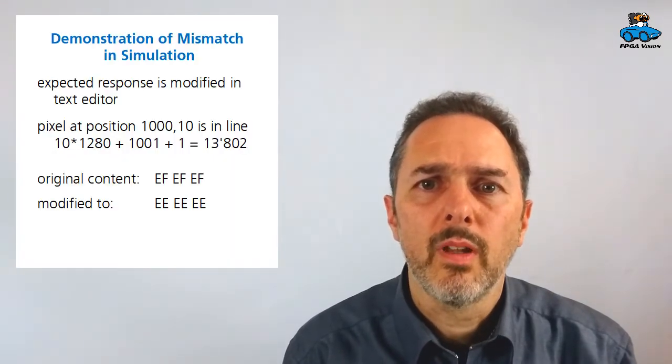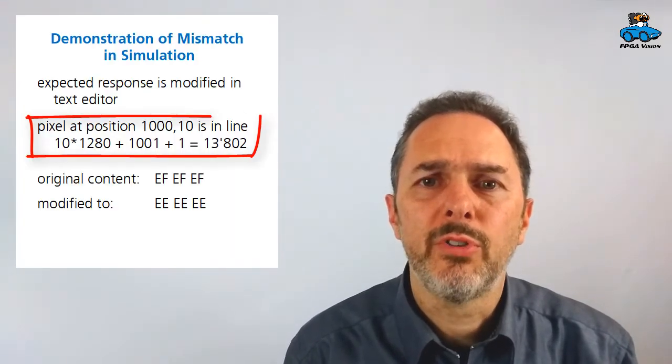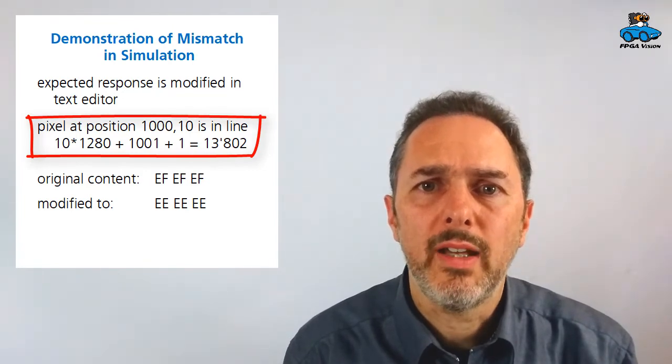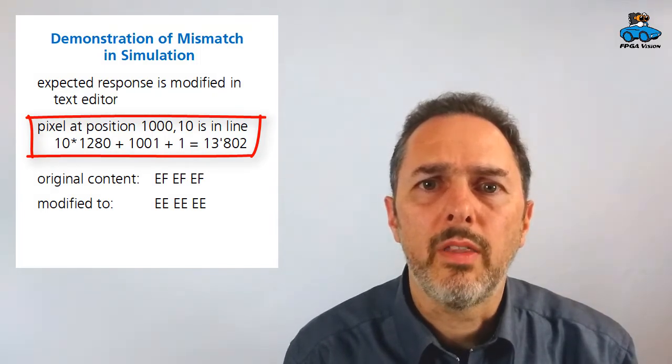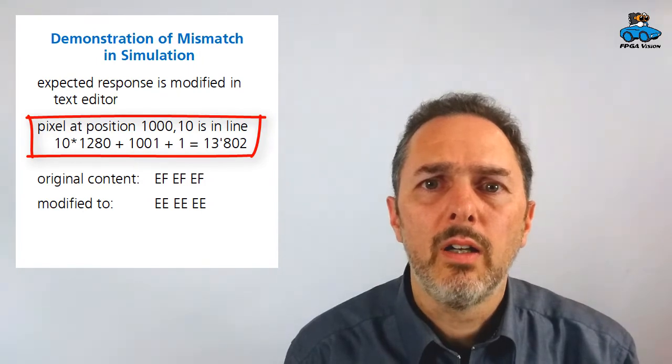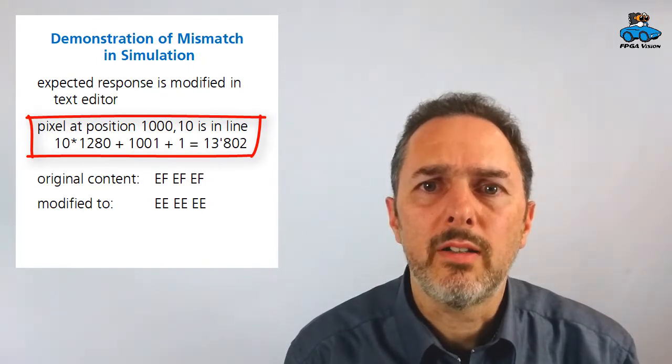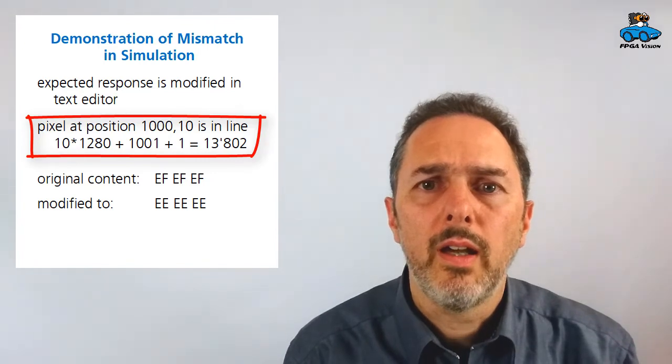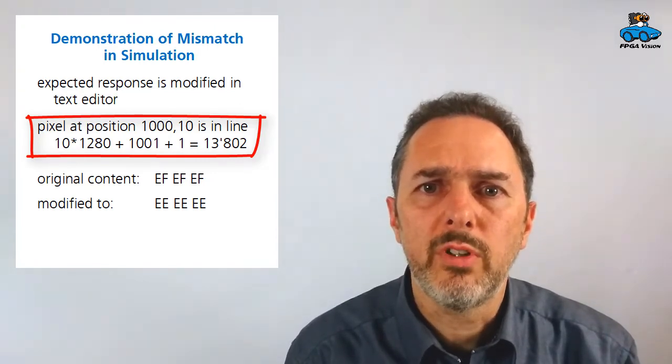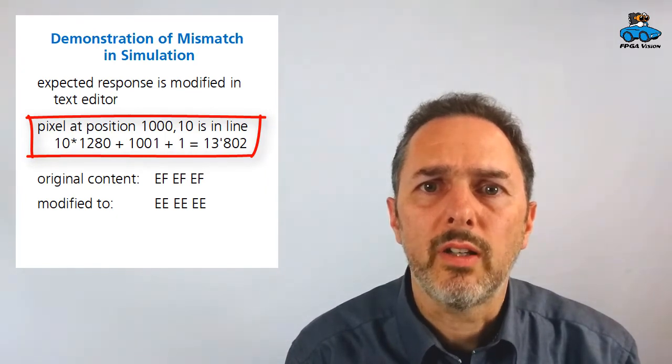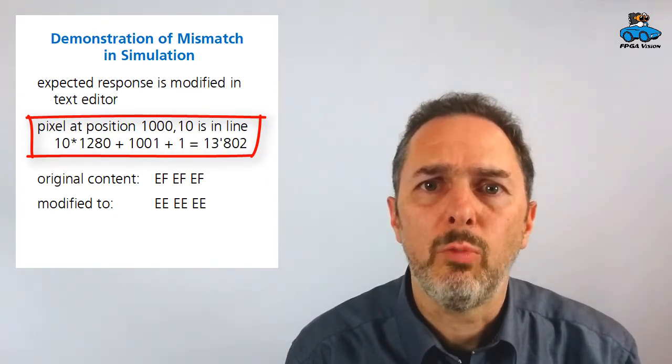To demonstrate the self-checking testbench, I will include an error in the expected response. We take the pixel at position 1000,10 and change the value there. To find this pixel in the testbench, we need to calculate the line of this pixel. 10 lines means 10 times 1280 pixels. And pixel 1000, we start counting from zero. So we have to take another 1001 position plus we have one comment line. So this is the line number we have to look for.